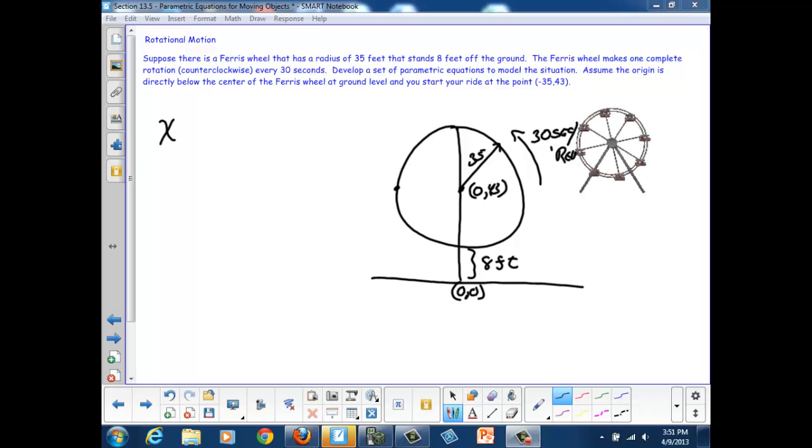Now we want to think about how to describe horizontal and vertical information. We're moving across the Ferris wheel. We start at one point, and at some point we're on the other side of the Ferris wheel over here. So we're moving back and forth, horizontally. And we're also moving up and down. At some point I'm at the bottom of the Ferris wheel, and at some time I'm at the top.